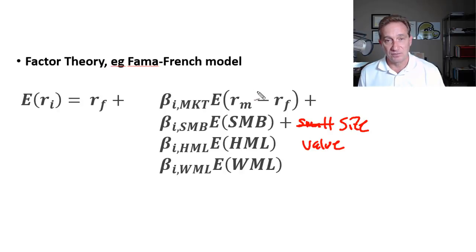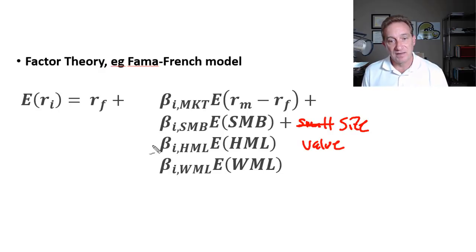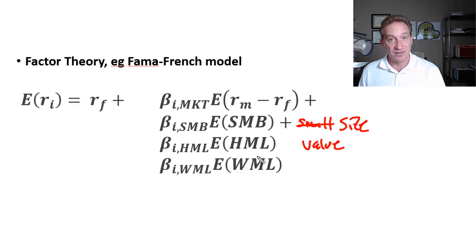The Fama-French model came along and added two factors. SMB is the small-cap or size factor — small minus big — meaning you get deserved excess returns as compensation for being long in small capitalization stocks. HML is the value factor — high minus low — based on the ratio of book to market. So this factor is compensation for buying cheap stocks, really a defense and justification of a value as opposed to growth style.